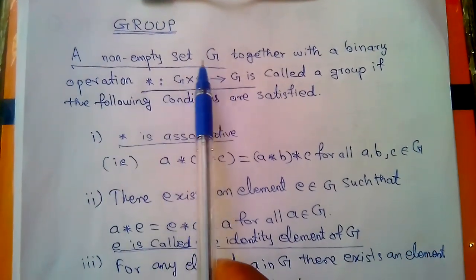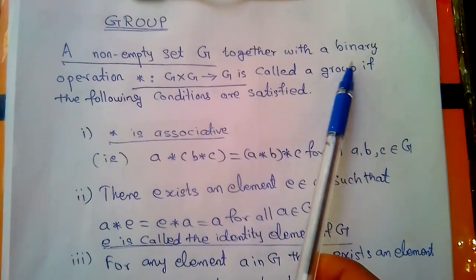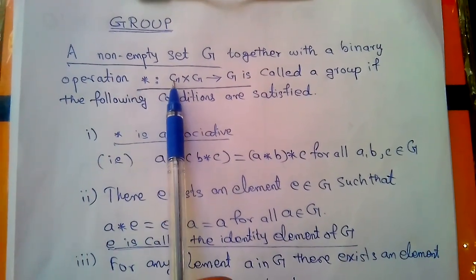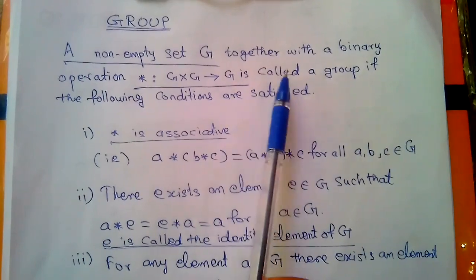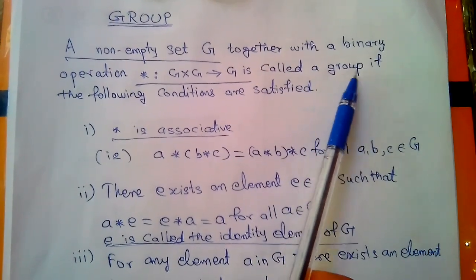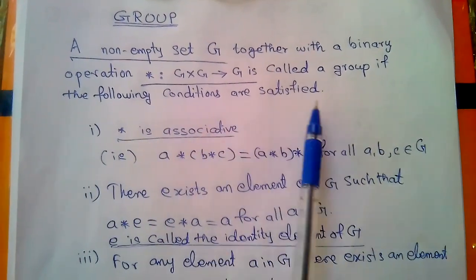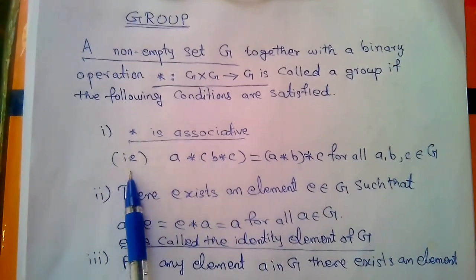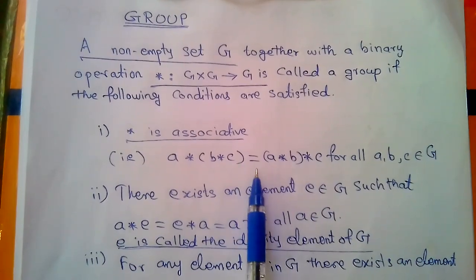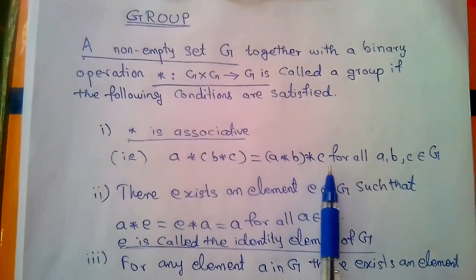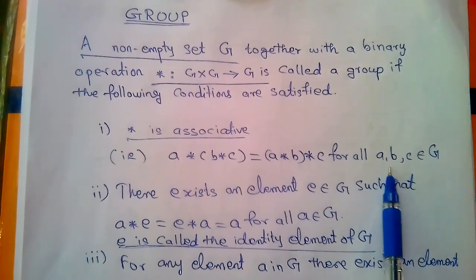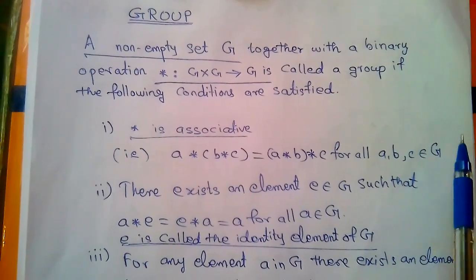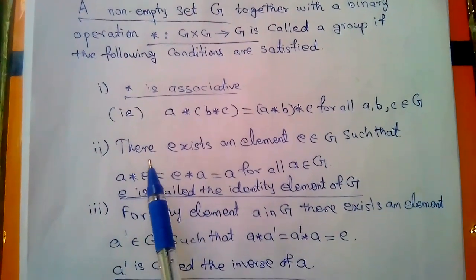A group: a non-empty set G together with a binary operation star, G cross G to G, is called a group if the following conditions are satisfied. First, star is associative, that is a star b star c is equal to a star b star c for all a, b, c belongs to G.